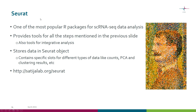During this course, we talk a lot about Seurat, which is one of the most popular R packages for single cell RNA-seq data analysis. It provides tools for all the steps mentioned, and for many other things — for example, integrative analysis where we compare gene expression in unstimulated and stimulated samples. Seurat stores data in an R object called a Seurat object, which contains specific slots for different types of data like UMI counts, PCA and clustering results, etc. The package is named after the French painter Seurat, who developed the pointillism style of painting — and of course, these points look a bit like the cells in our UMAP plots.